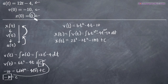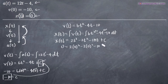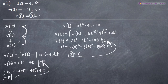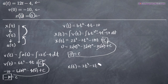Now we use our initial condition x(0) = 0. Plugging in: 0 = 2(0)³ - 2(0)² - 10(0) + C, which gives us 0 = 0 + 0 + 0 + C, so C = 0. Plugging that back into the position function, we get x(t) = 2t³ - 2t² - 10t. And that's our position function.